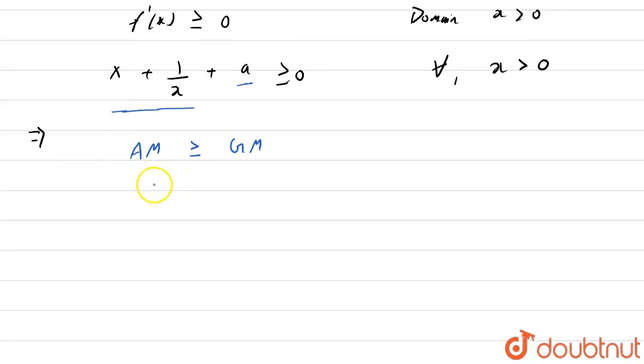then we find that x plus 1 upon x divided by 2 is greater than or equal to GM, that is x into 1 upon x to the power 1 by 2,